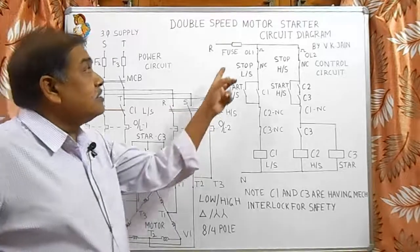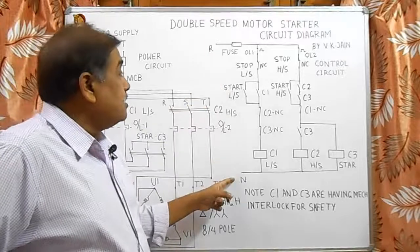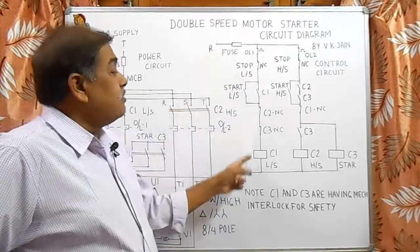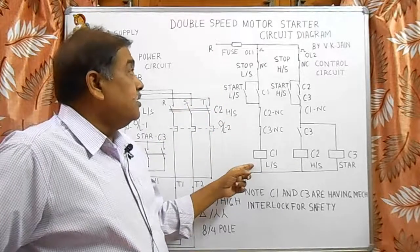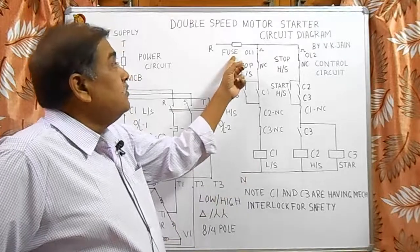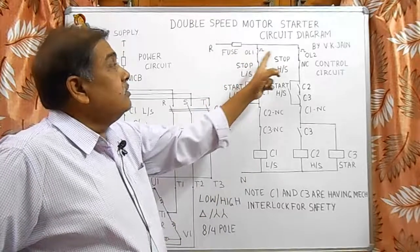Here in this control circuit we have taken neutral and R phase as our coils are of 230V. Here is control fuse, then overload 1, overload 2.